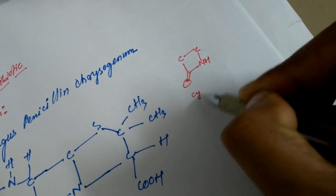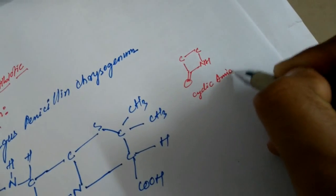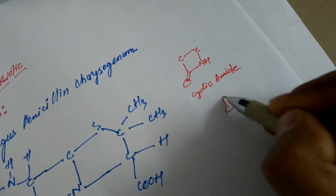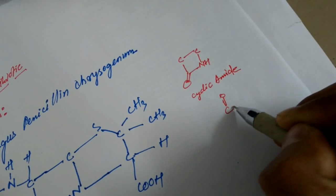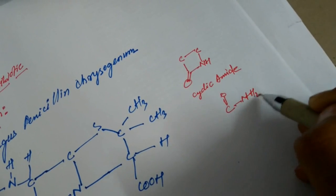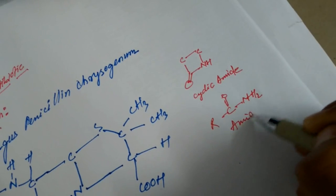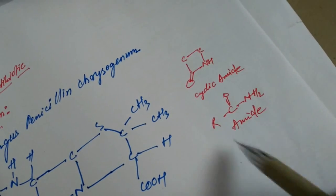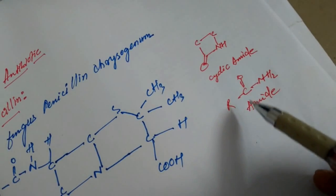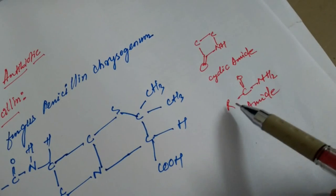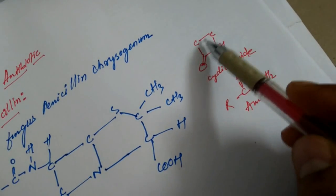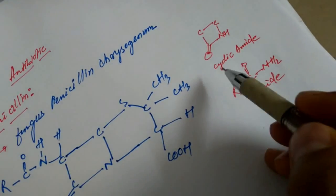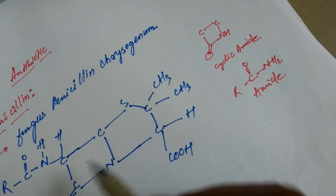This is a cyclic amide. A normal amide looks like this — this is the amide group. A cyclic amide is when the amide is in a ring form. Don't get confused: cyclic means it is round in shape. It is open here — straight and open — and cyclic means round. This here is the beta-lactam.